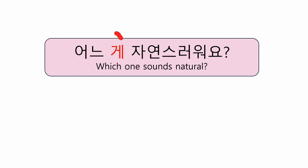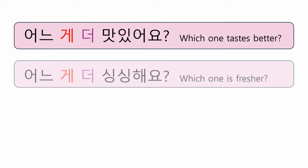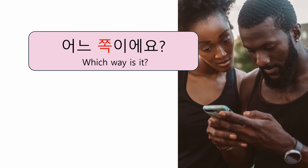어느 게 더 자연스러워요? — Which one sounds more natural? 어느 게 더 맛있어요? — Which one tastes better? 어느 게 더 싱싱해요? — Which one is fresher? For direction, we use the dependent noun 쪽: 어느 쪽이에요? — Which way is it?